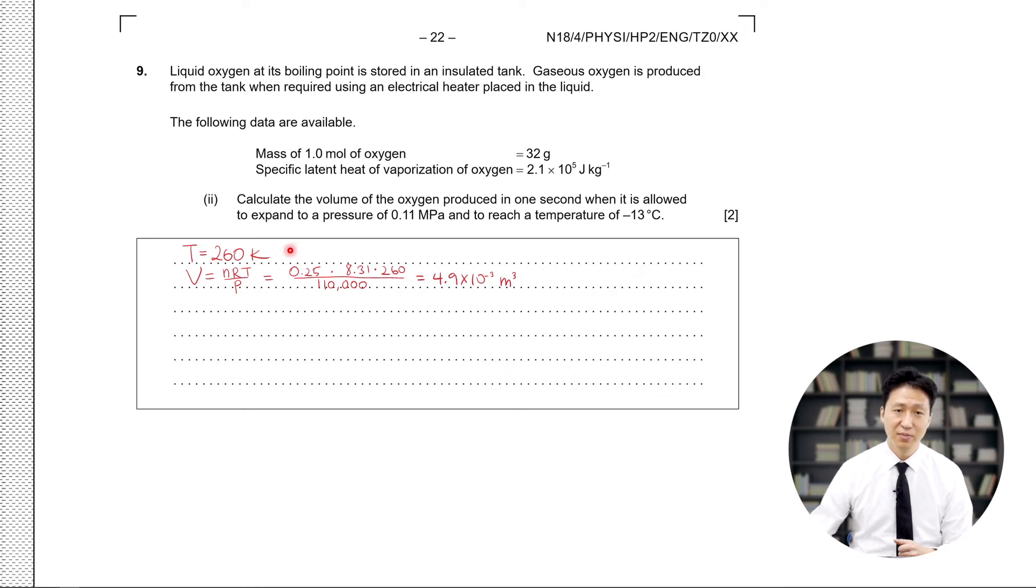Inputting the numbers, having the number of moles be 0.25, the gas constant 8.31, and the temperature is 260, whereas the pressure is 110,000 Pa. It gives us 4.9 times 10 to the negative 3 meters cubed.